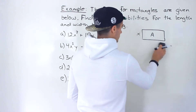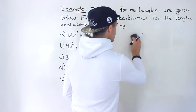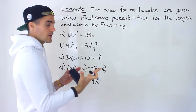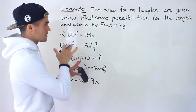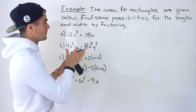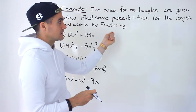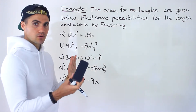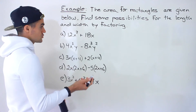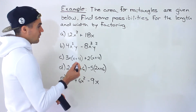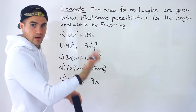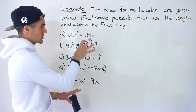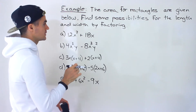One thing to mention: you don't necessarily have to take out the greatest common factor, because the problem says to find some possibilities, meaning there are multiple valid solutions. I'm going to factor using the greatest common factor, but I'll also show other possibilities.